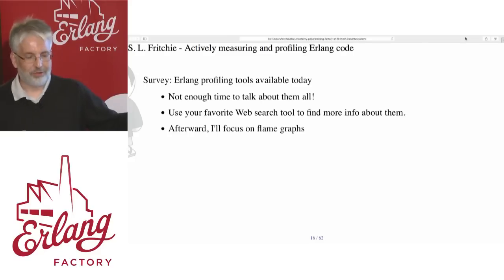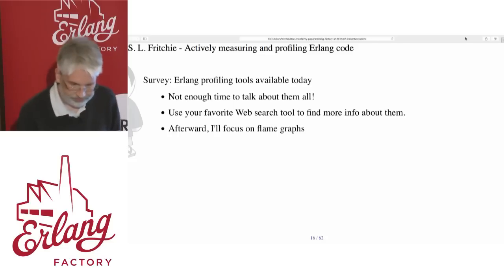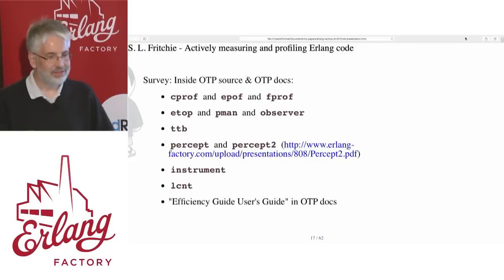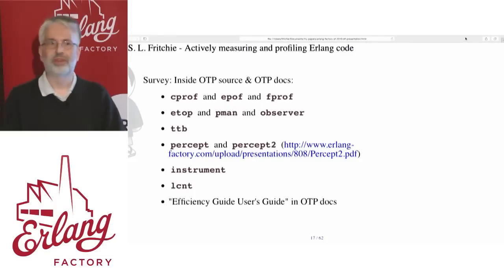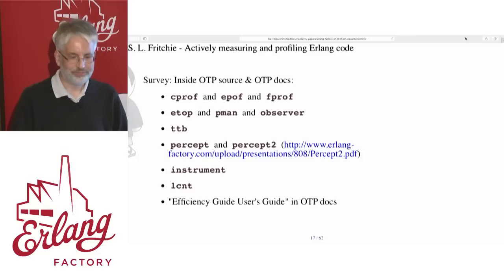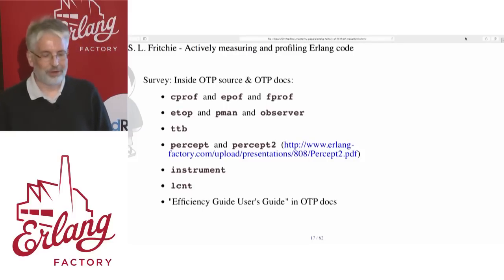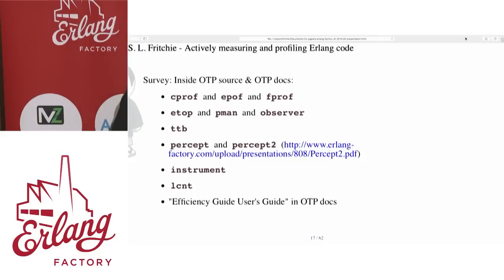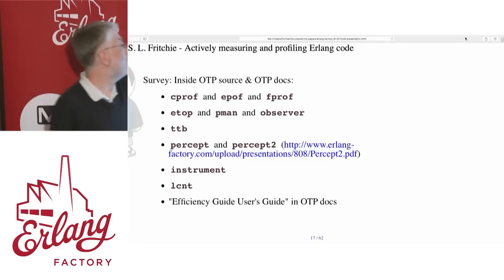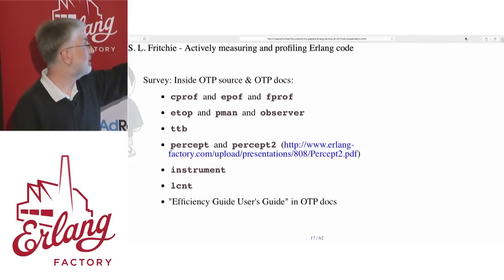The second half of my talk I'll focus most of the time on flame graphs. I have a couple of different categories: one for things that are bundled along with OTP in the distribution one way or another, except for Percept. But since so many of the people involved in the Percept project and the research groups around it, I included it in the OTP source, especially since version one of Percept actually is in OTP.